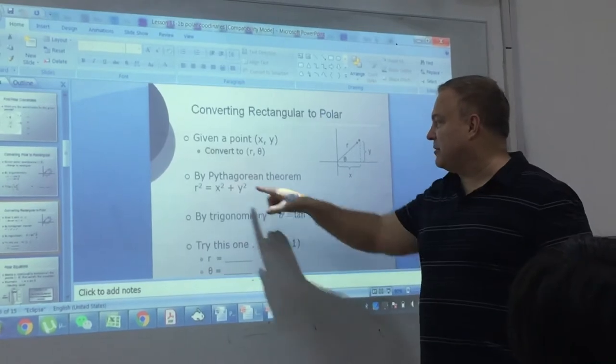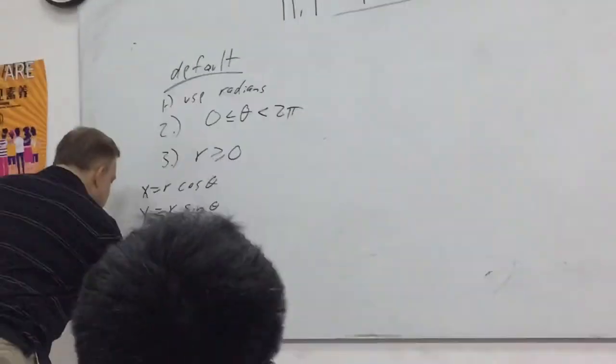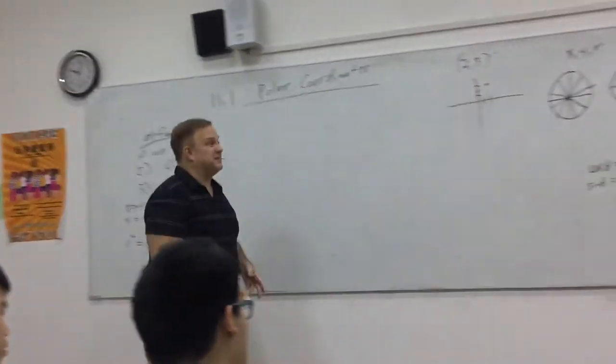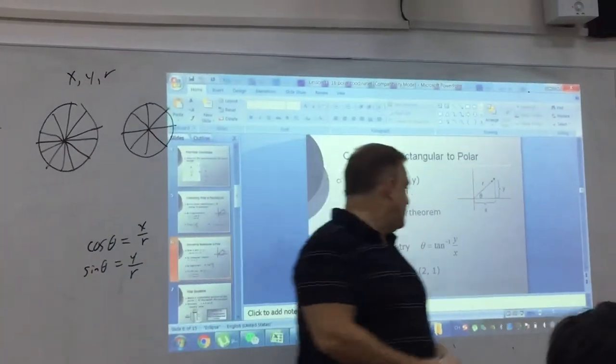Now, notice we have two formulas here. One of them is R squared equals X squared plus Y squared. And that's obviously just the Pythagorean theorem, right?